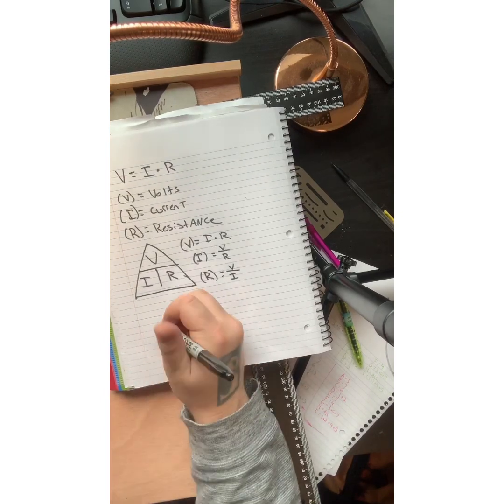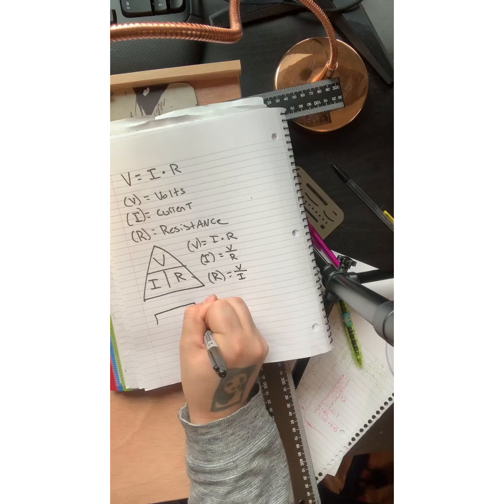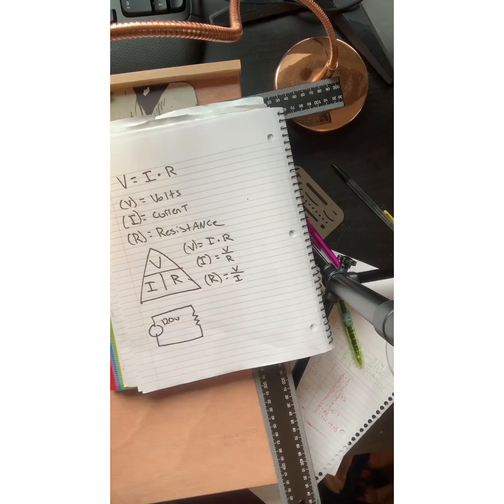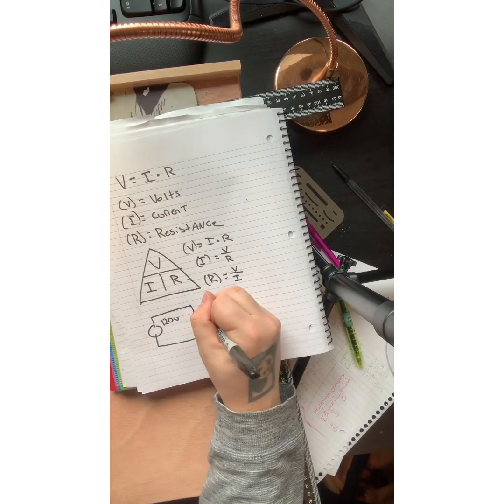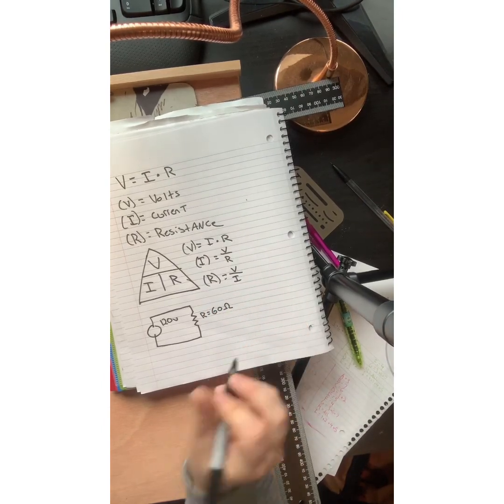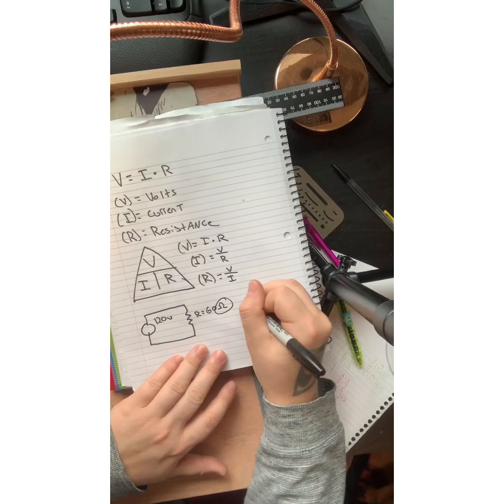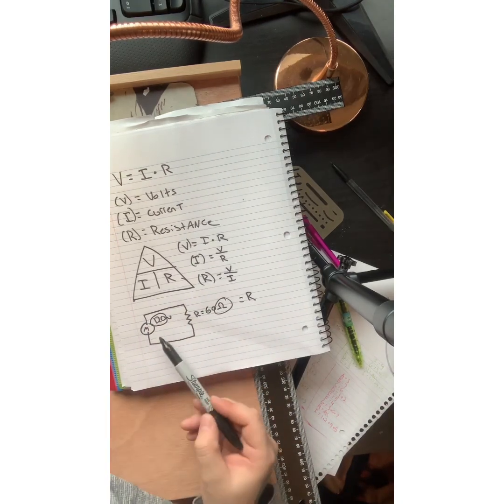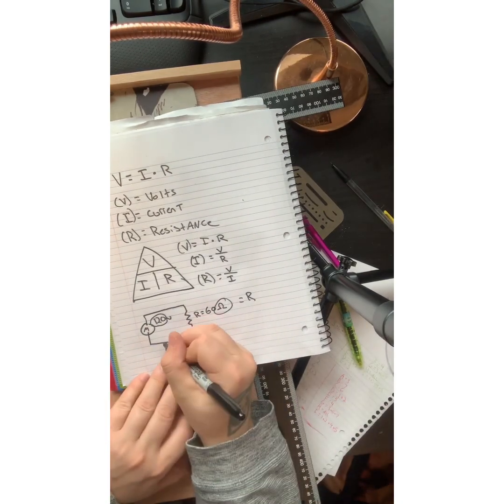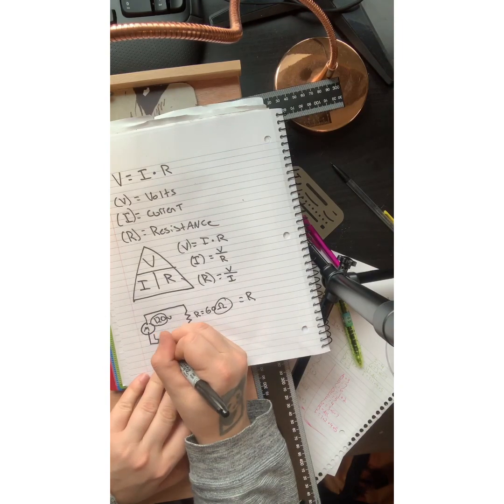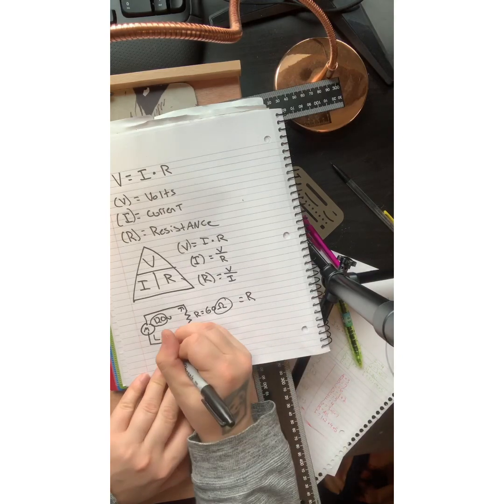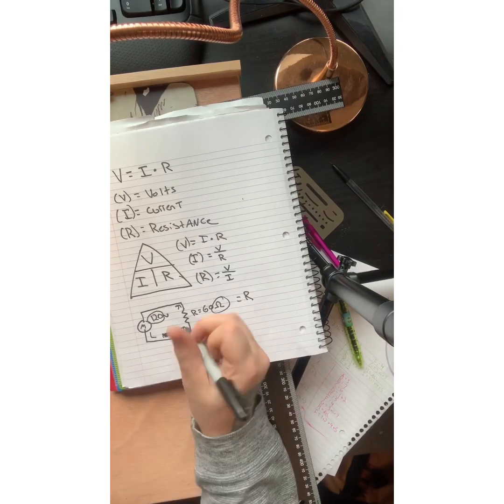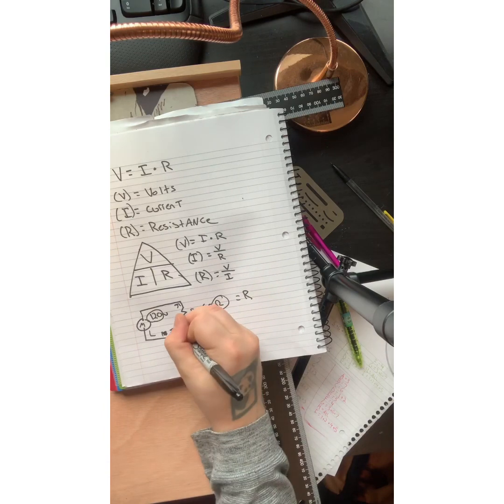Another real quick example just to kind of show how this would work. Let's say you have a circuit here with 120 volts starting and a resistance of 60 ohms. So this ohms here is going to be equal to your R. This 120 of your motor or whatever would be 120 volts. And then you have your current flow and let's say that that is nothing. So we don't know what our current is. This is more what an equation would look like.